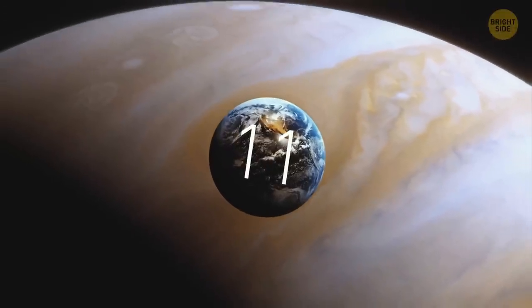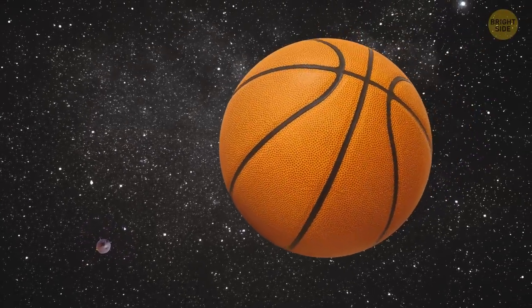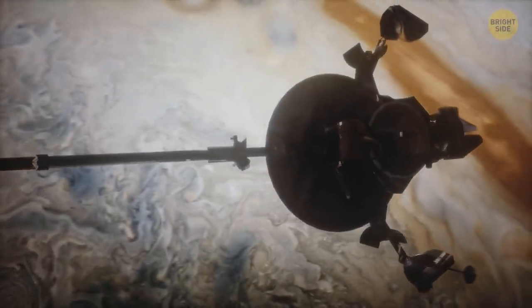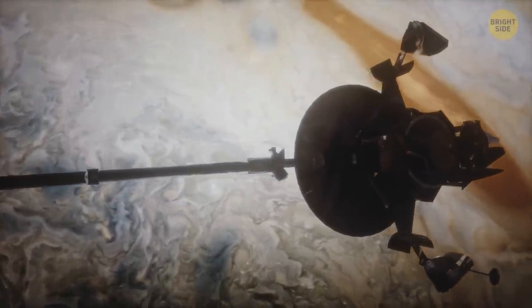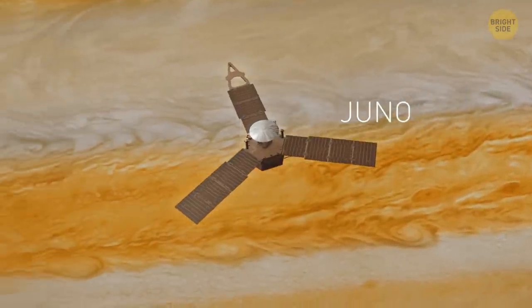Eleven Earths could fit across the equator of Jupiter. And if our planet was the size of a grape, the gas giant would be as large as a basketball. Nine spacecraft have already visited Jupiter. Seven of them just flew by, and two orbited the huge planet. The most recent of them, Juno, arrived at Jupiter in 2016.